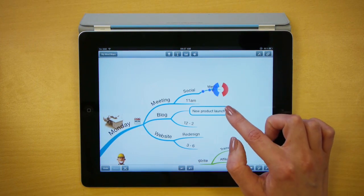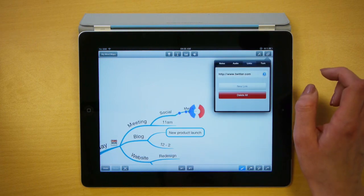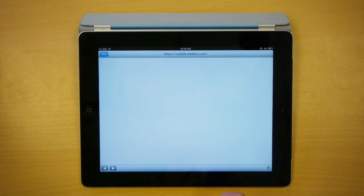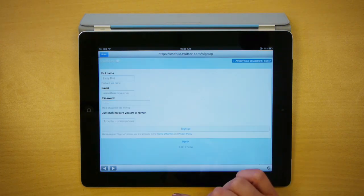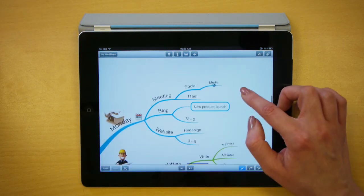If at any time you want to open the URL, simply make sure the branch is selected, go to the attachments icon, and click on the URL. This will open the web page, and when you're finished, select done and you'll go right back to your map.